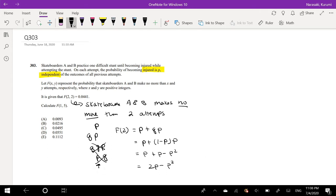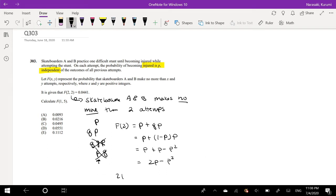Alrighty, and but this is only for one person. For two people, it's going to be this times itself, or we can just say it's squared. This is equal to F of 2, 2. And they give you that this is equal to 0.0441.